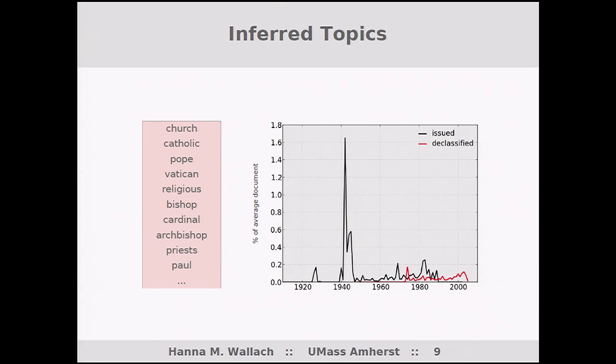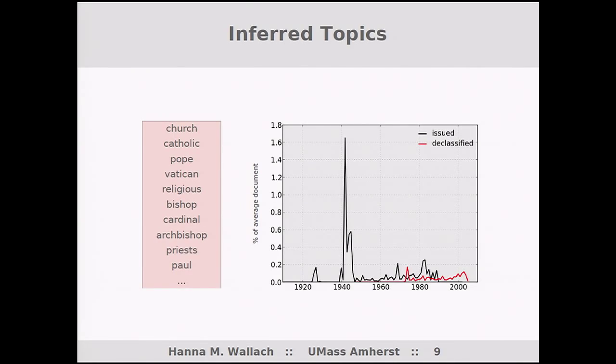Here's a topic where the top words are church, Catholic, Pope, Vatican, religious. There's clearly something going on — clearly a coherent theme — but how does this relate to these classified documents? What I did was plot the percentage of a typical document issued (the black line) and declassified (the red line) in every year that the database spans. We see a really big spike somewhere around 1942. I googled church, Catholic, Pope, Vatican, and 1942, and it turns out that 1942 was the year Pope Pius XII made a Christmas address about the Holocaust. This was a really big deal with a lot of discussion — and that's what these documents are about.